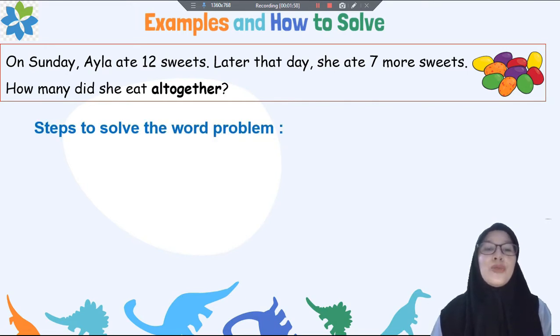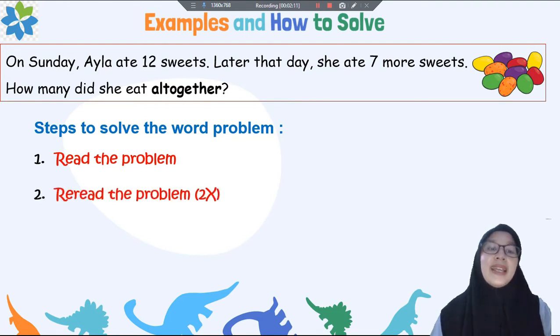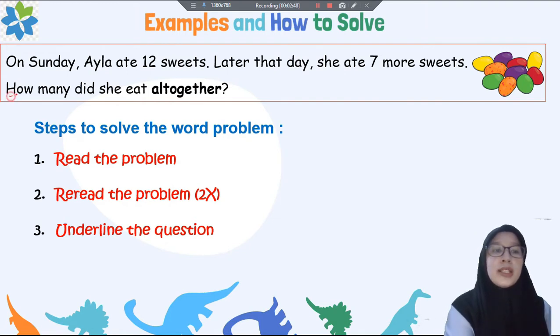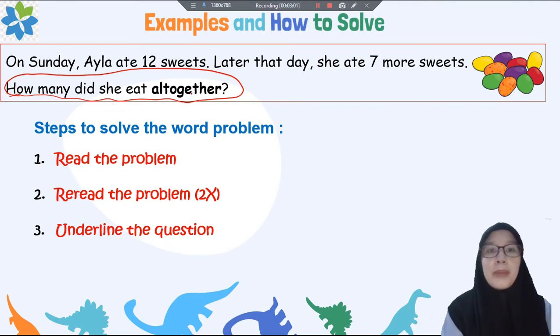I want to show you the steps to solve the word problem. First, read the problem. Pertama yang harus kalian lakukan adalah membaca soalnya atau membaca ceritanya. And then, reread the problem at least twice. Jadi silahkan kalau sudah dibaca sekali, dibaca sekali lagi paling tidak kalian sudah berhasil membaca dua kali soal itu agar kalian memahami. And then next, underline the question. Silahkan kalian berikan garis bawah pada apa yang ditanyakan atau pertanyaan dari soal itu.